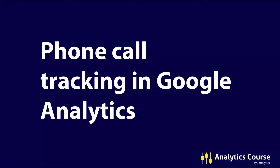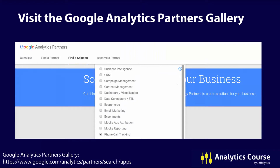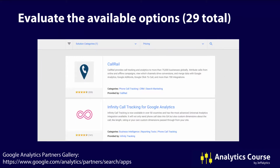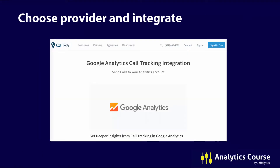The other question Bella Donna had was about phone call tracking in Google Analytics. Go to the Google Analytics Partners Gallery at the URL below, choose phone call tracking as the app type, and evaluate the available options — at the time of this recording there are 29 tools available. Choose a provider, read their materials, check the cost, and review how their Google Analytics integration works. If you like what you see, sign up and start tracking phone calls right inside Google Analytics.